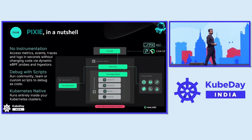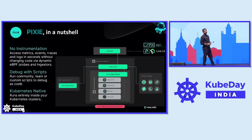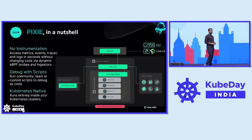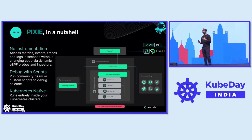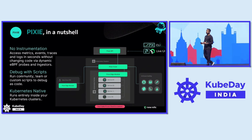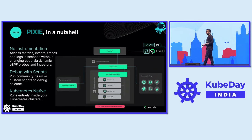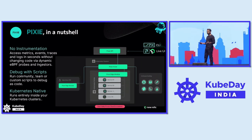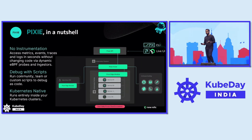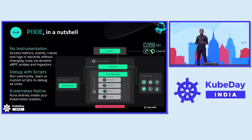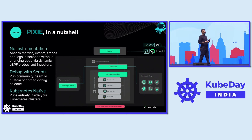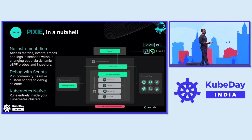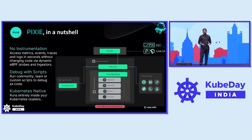And best of all, Pixie is Kubernetes native. Pixie modules run natively in each of your cluster nodes, and all the telemetry data is stored in the memory of the cluster for up to 24 hours. You can choose to export all or selected data to an external long-term storage.